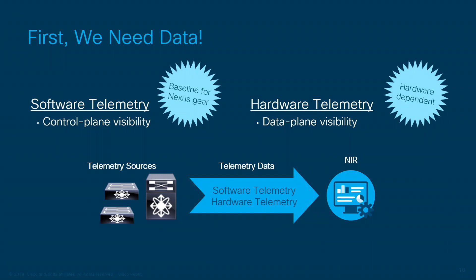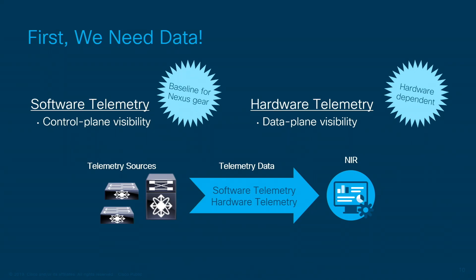Just like with NIA, we're focused on bubbling up problem areas right away so you don't have to slog through reams of data. Network Insights Resources takes care of configuring the switches to send what needs to be sent — you don't need to go in and figure out which objects and CLIs to stream. NIR takes care of that. Software telemetry gives us control plane visibility — anything visible via show commands can be streamed, and if it can be sent as structured data, which the vast majority of CLI outputs can, we can stream it.